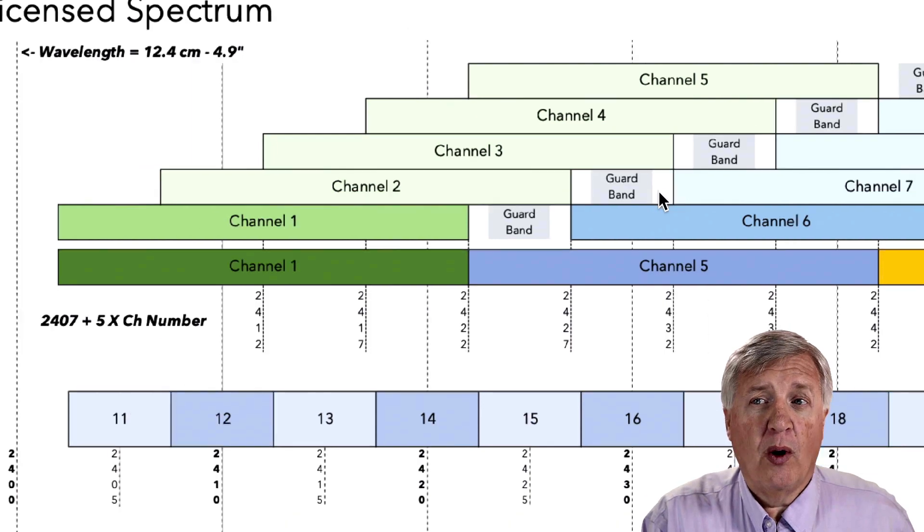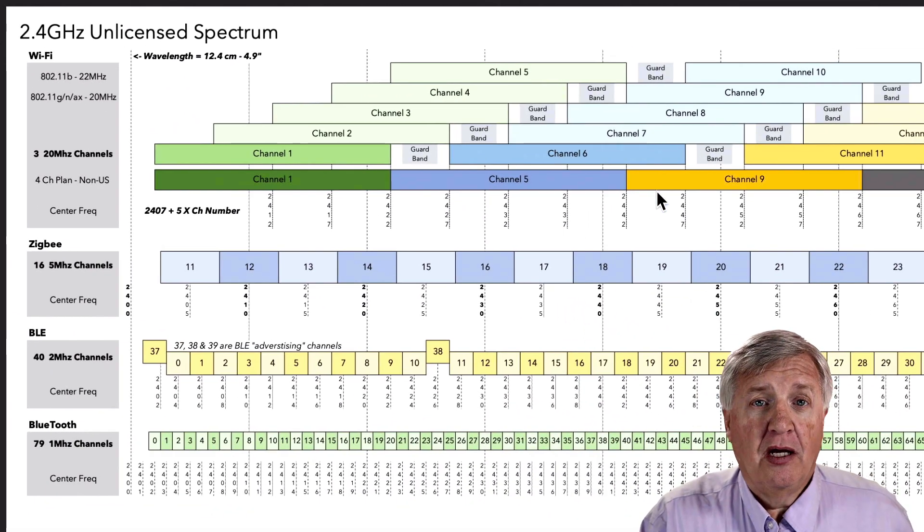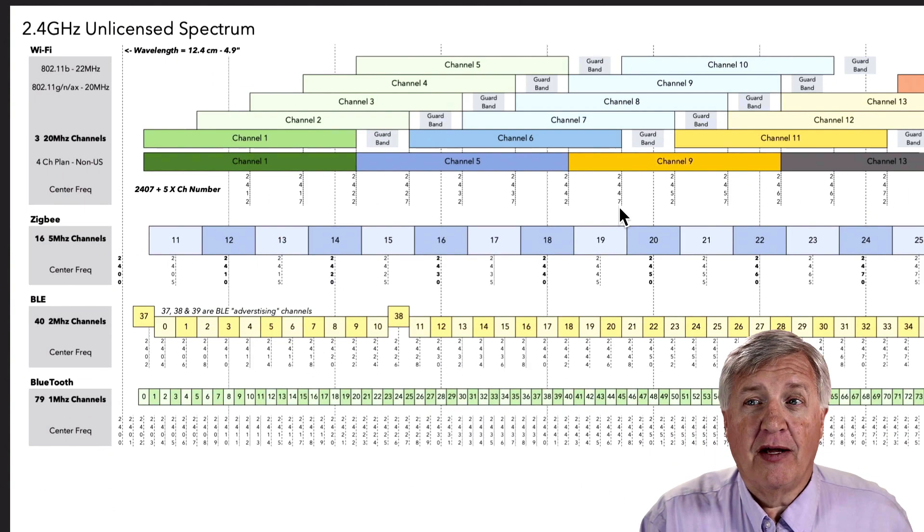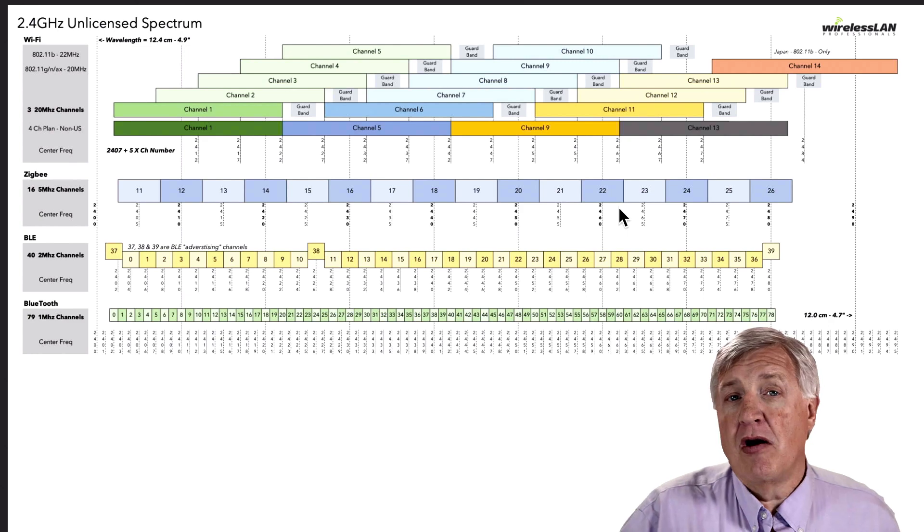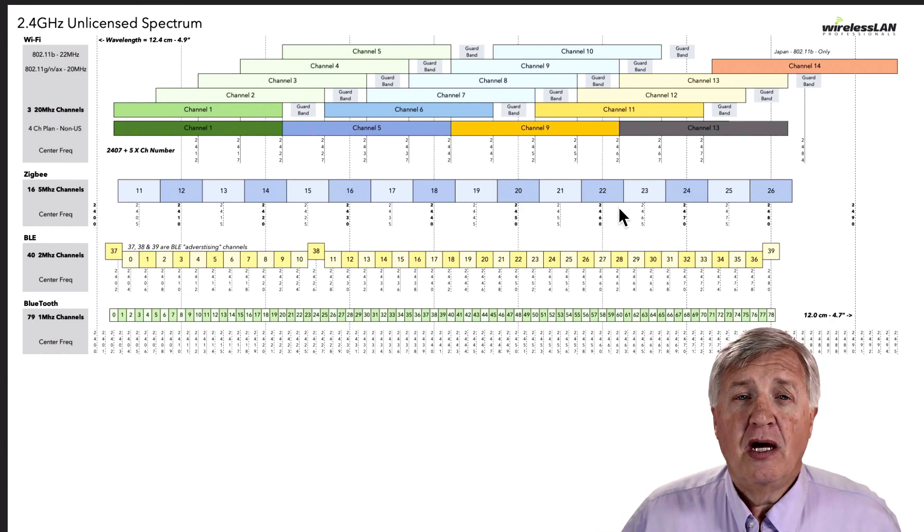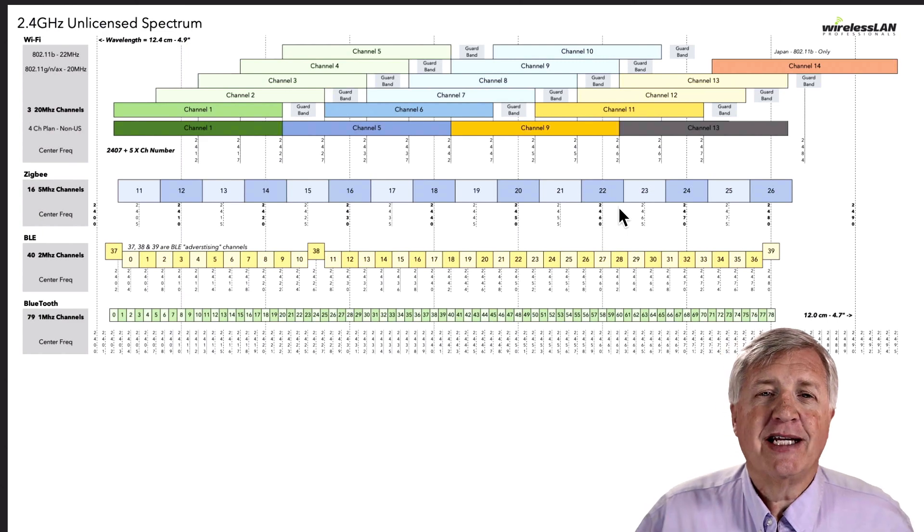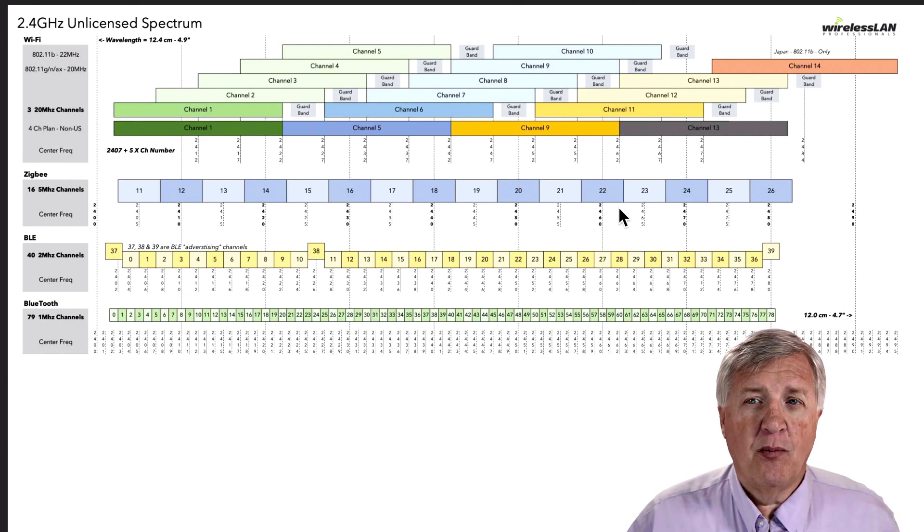In the US, we go through channels 1 through 11. But other countries use different channels. It doesn't matter what country you live in. It still works out that we only have three channels that are not overlapping. Yes, you can use those other channels. The problem is that causes something called adjacent channel interference.